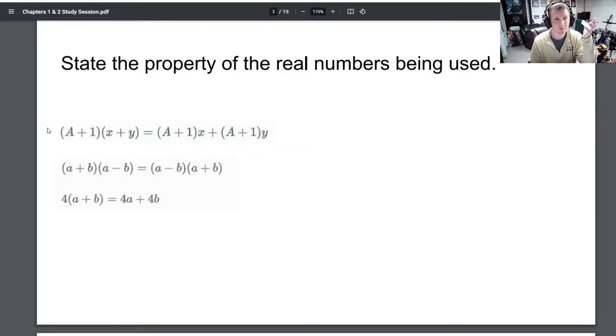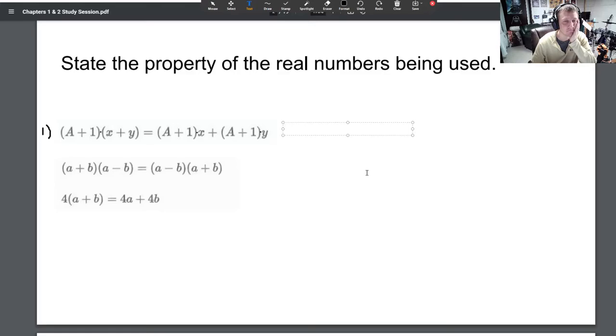So let's go ahead and get started. This is three separate problems. So this is problem one, two, and three. So for problem one, what property of the real numbers is being used? We've got (a+1) times (x+y). It turns into (a+1) times x plus (a+1) times y. What is that property called? Distributive property. Perfect. Nailed it. That is the distributive property.